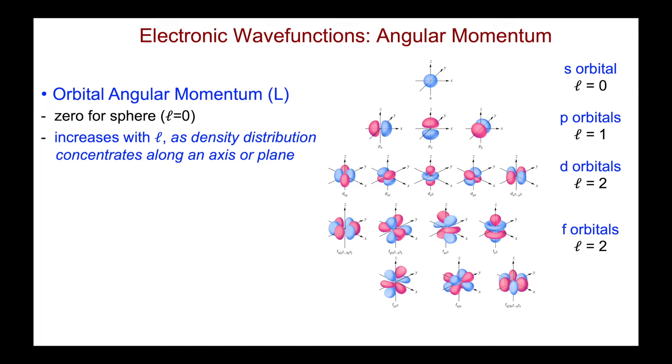The reason for this is that the density distribution concentrates along either an axis for the p orbitals, or along a plane for the d orbitals, and indeed for the f orbitals. And so, as l increases, I go from zero angular momentum for the s orbital, and that progressively increases as I go from p to d to f. And I can quantify the angular momentum, should I desire to do so, through this equation.